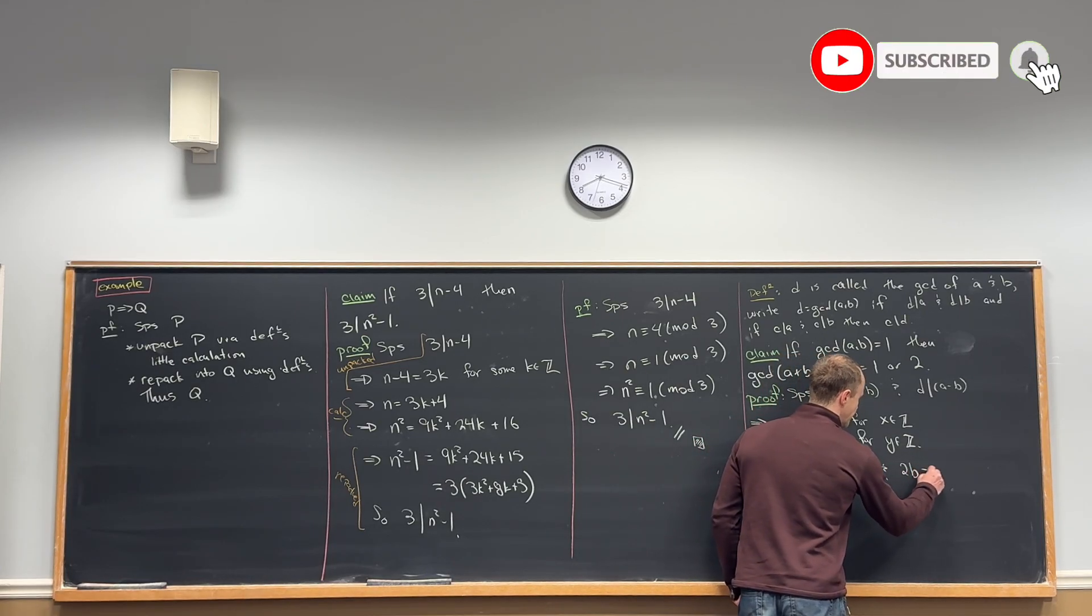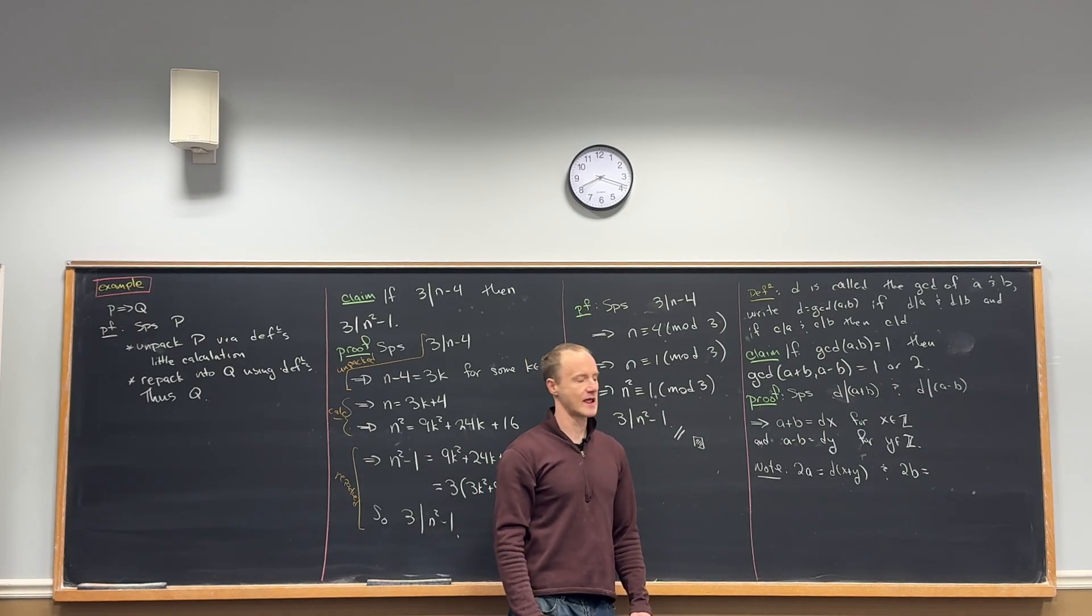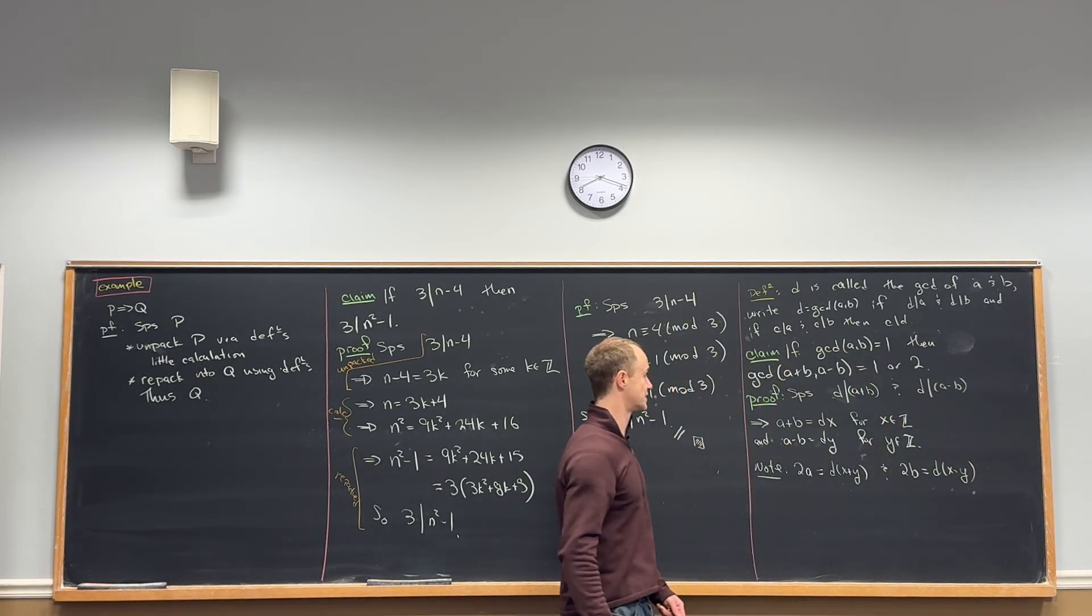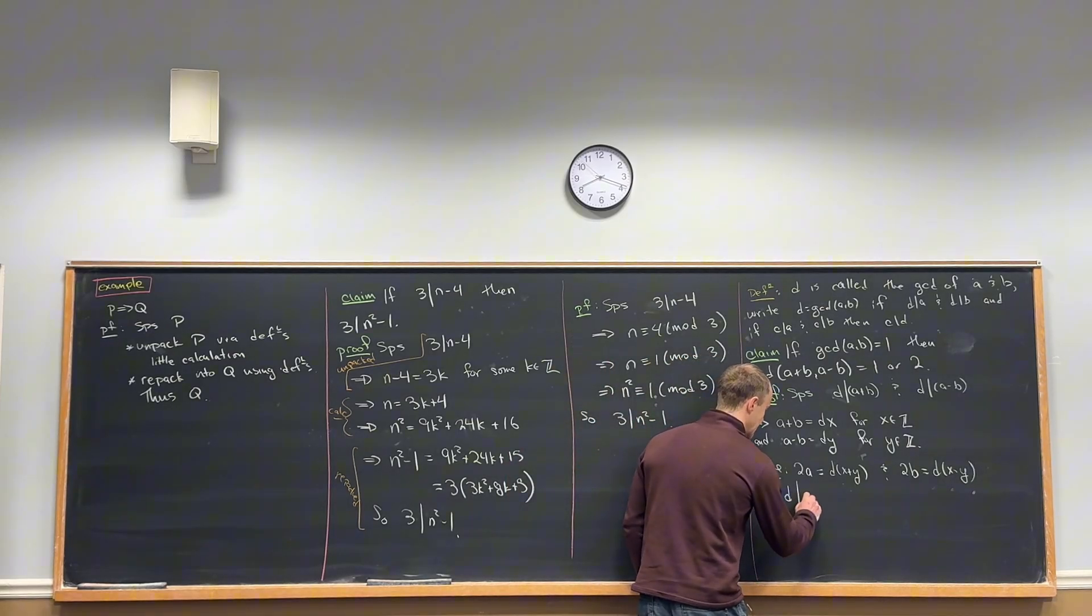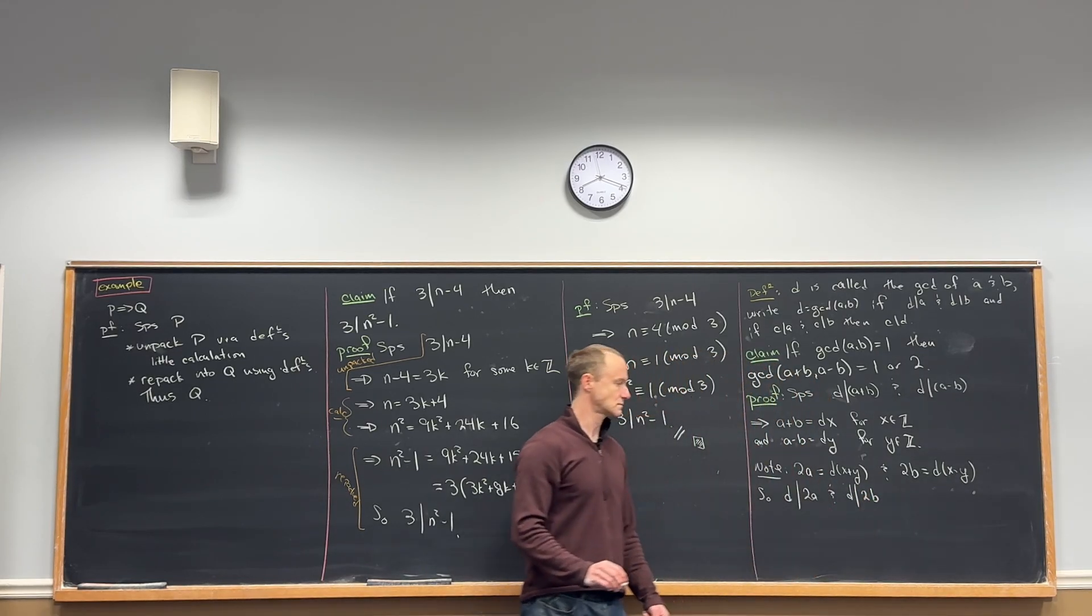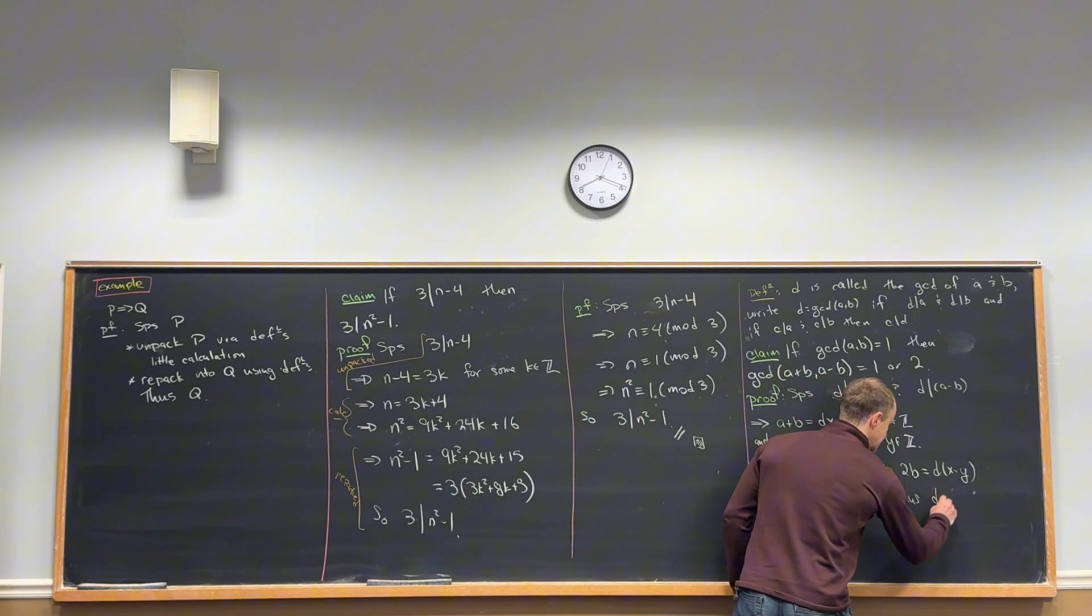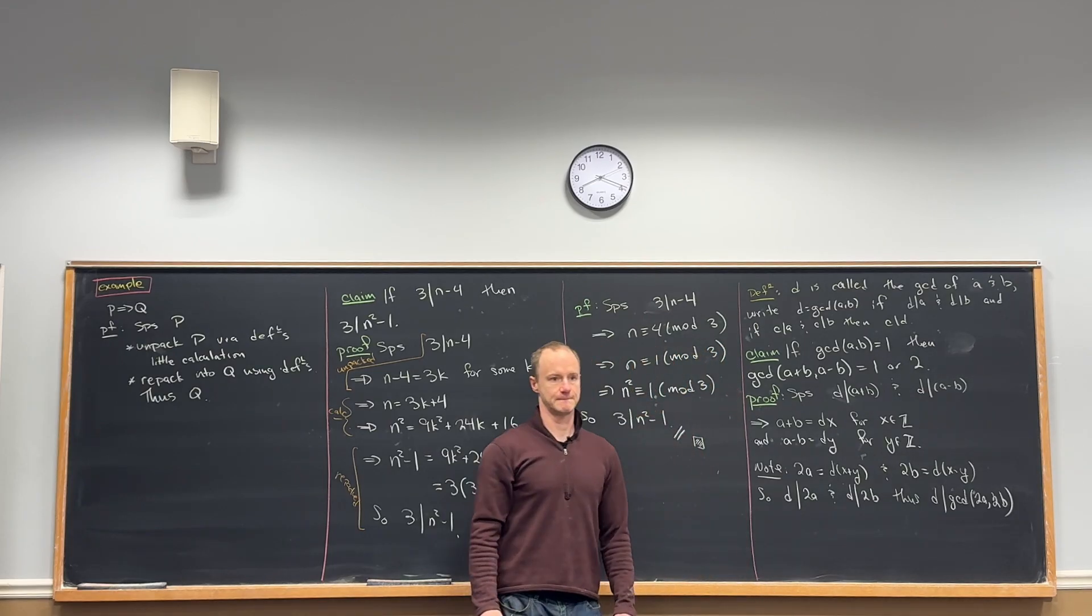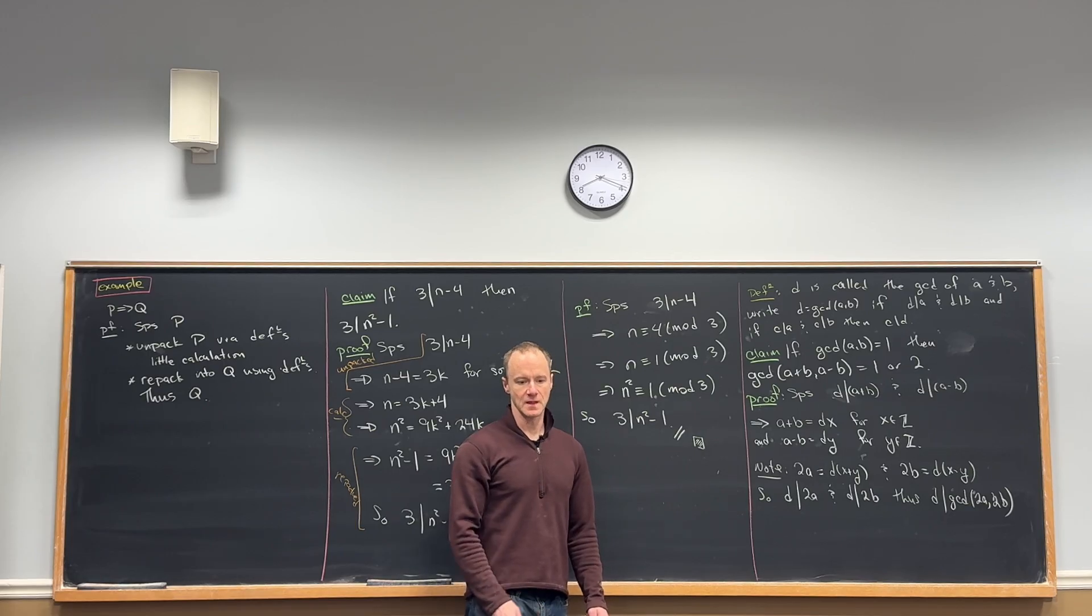And we can write 2B as D times the quantity X minus Y, just from subtracting. And then let's notice what we have here. We have D divides 2A and D divides 2B, which means D divides the GCD of 2A and 2B. If it divides both of them, it's got to divide their GCD.